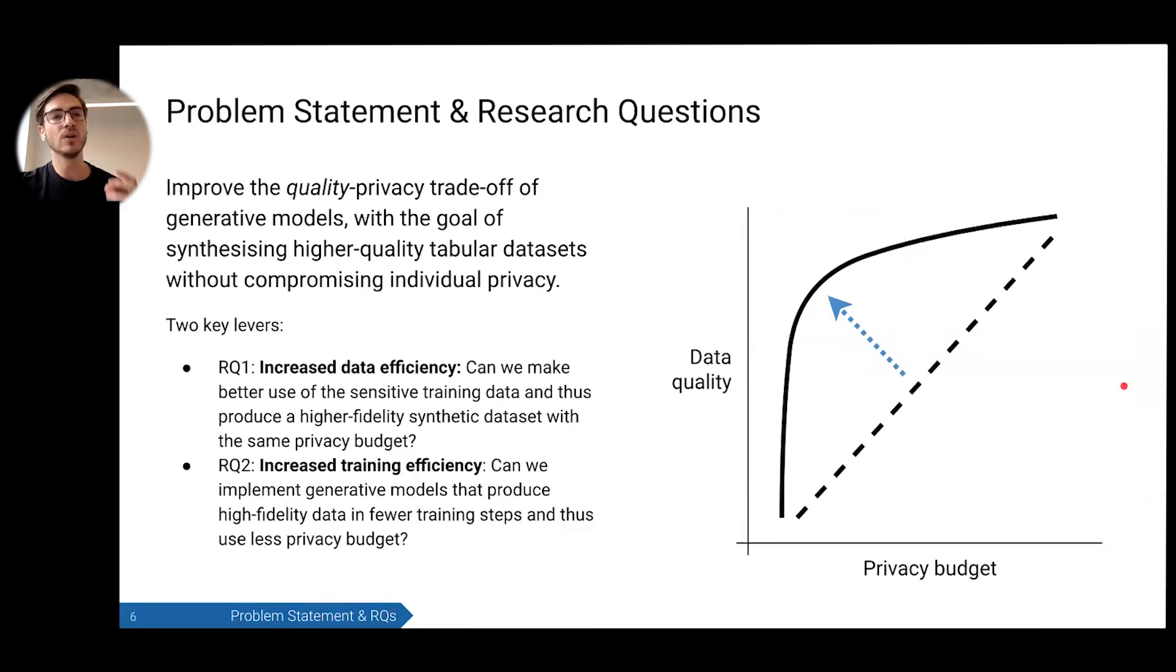The goal is to improve this quality-privacy tradeoff of generative models. If you increase the privacy budget, relax the amount of privacy, then your quality tends to go up. But we want to extend this area under the curve—synthesize higher-quality tabular datasets and still not compromise individual privacy. There's two key levers here. The first is, can we increase the data efficiency? If you can make better use of the sensitive training data and produce a higher-fidelity synthetic dataset with the same privacy budget, then you win. You can also think about increasing the training efficiency. If you have generative models that produce higher-fidelity data in fewer training steps because they're more stable and more convergent, then you use up this privacy budget slower.